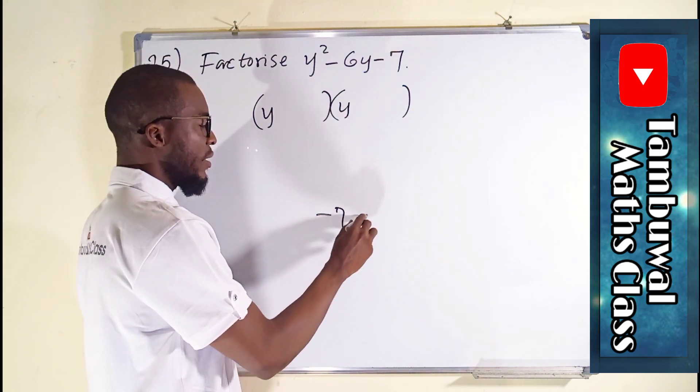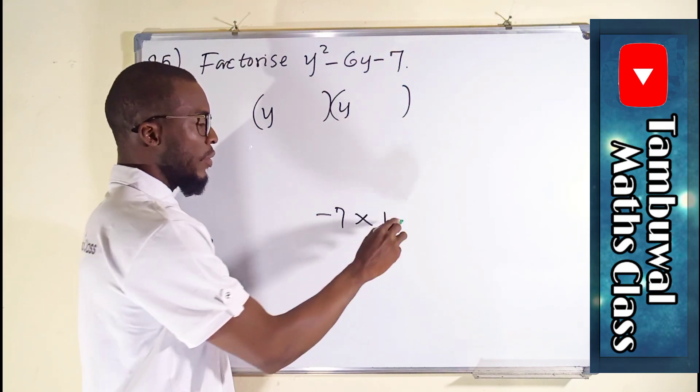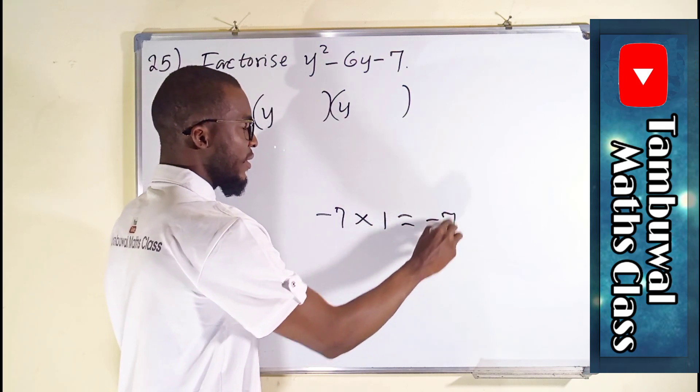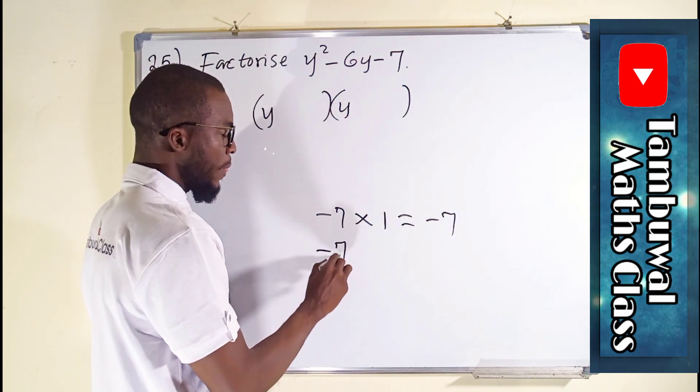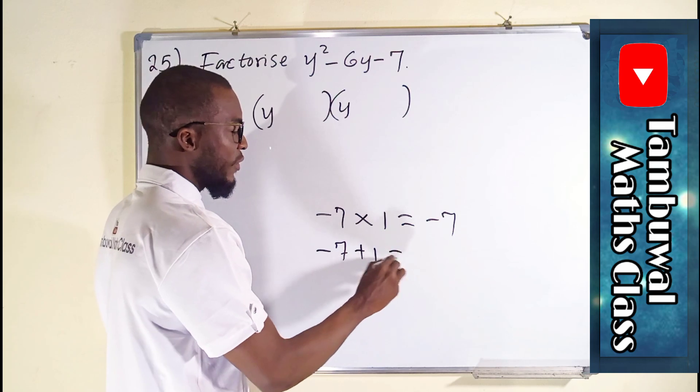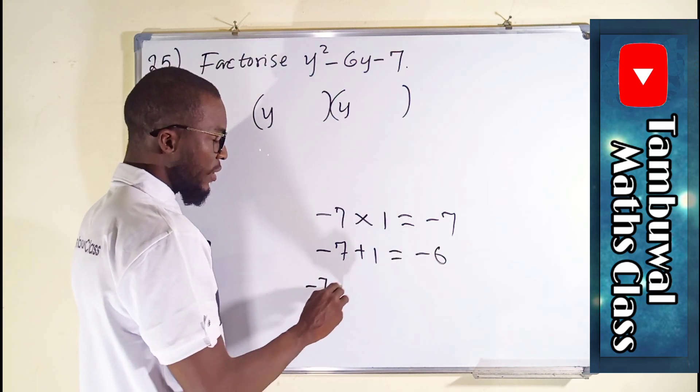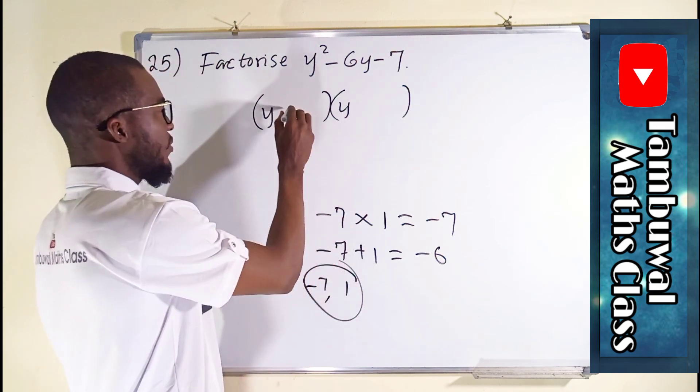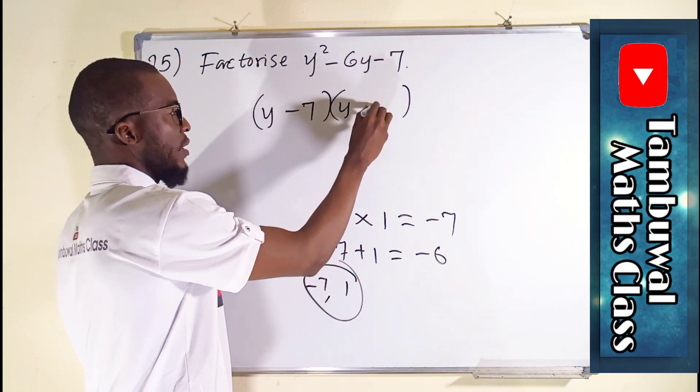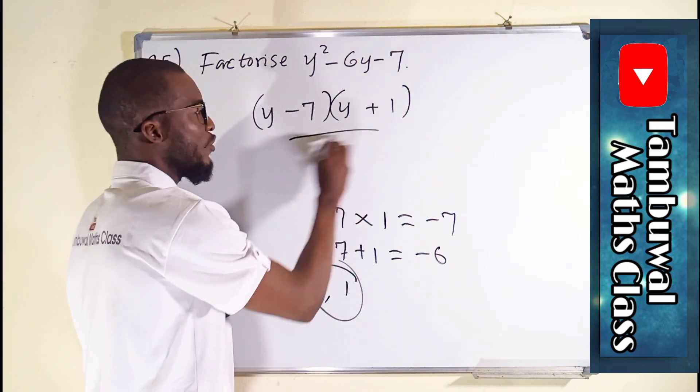I know definitely minus seven multiplied by one will give us minus seven and minus seven plus one will give us minus six. Therefore the right combination is minus seven and one. So just write minus seven here and write plus one here and you are good to go.